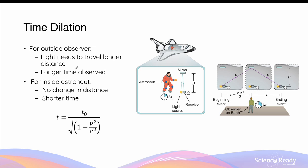For the observer outside on Earth, light has to travel a longer distance due to the motion of the spaceship, and as a result, a longer time t is observed. For the observer inside the spaceship — the astronauts — who are moving at the same velocity, there is no difference in the distance travelled by the light, because light only has to travel upwards to the mirror and back. As a result, the astronaut will measure a shorter time, t0.